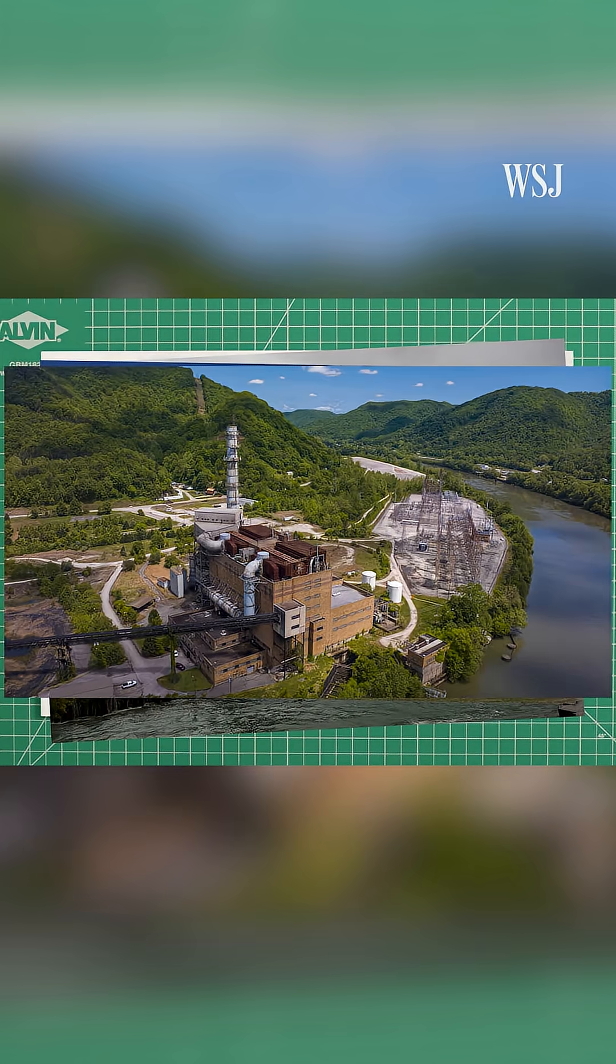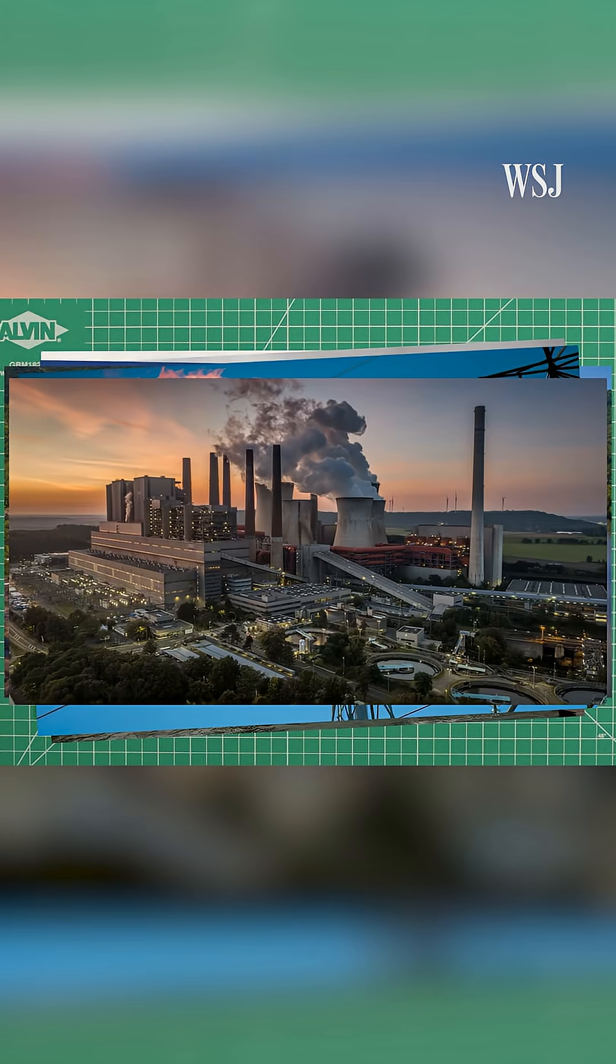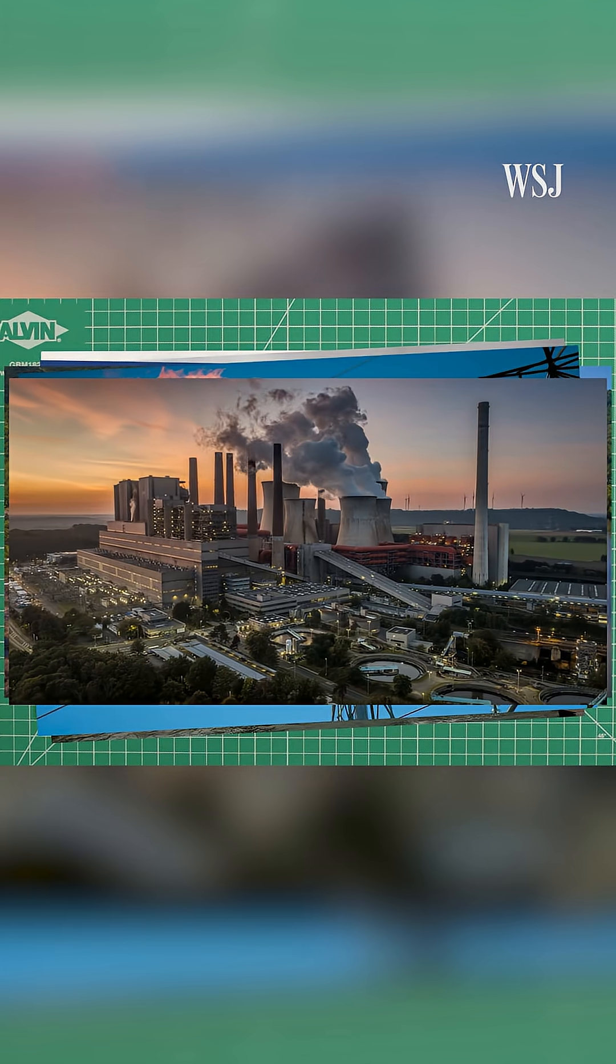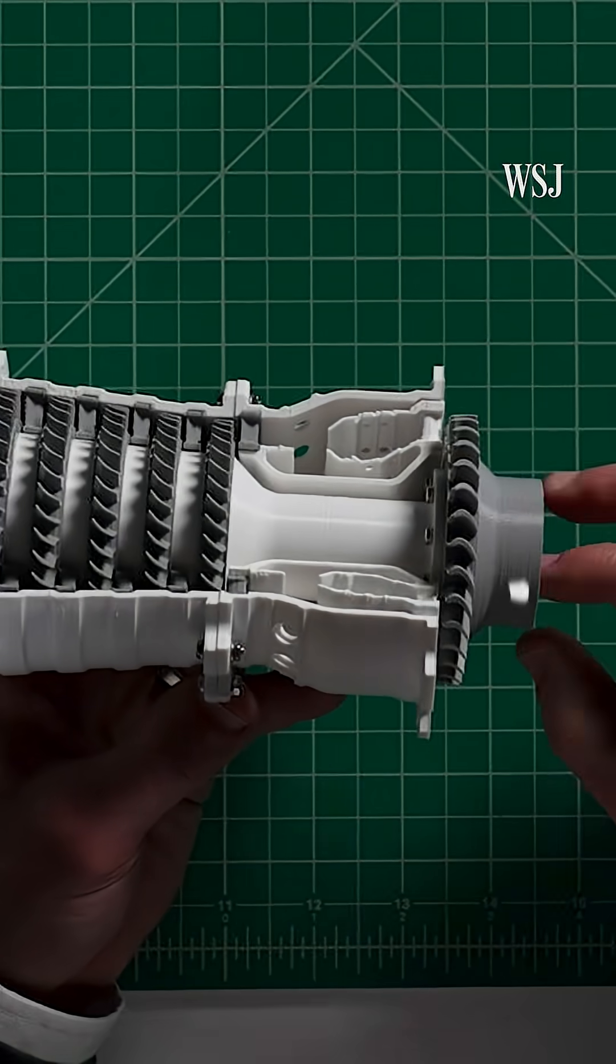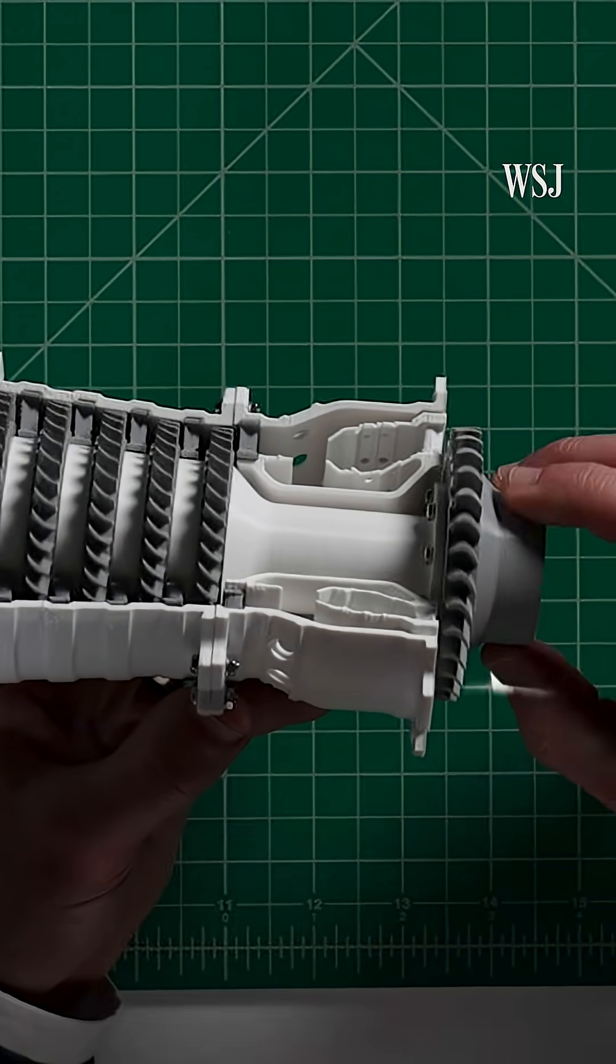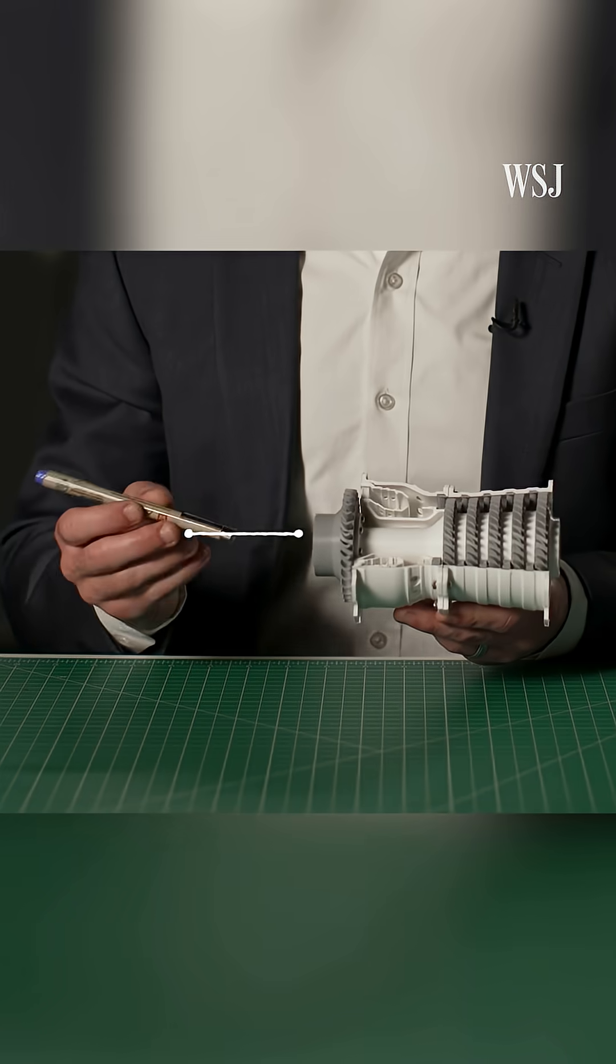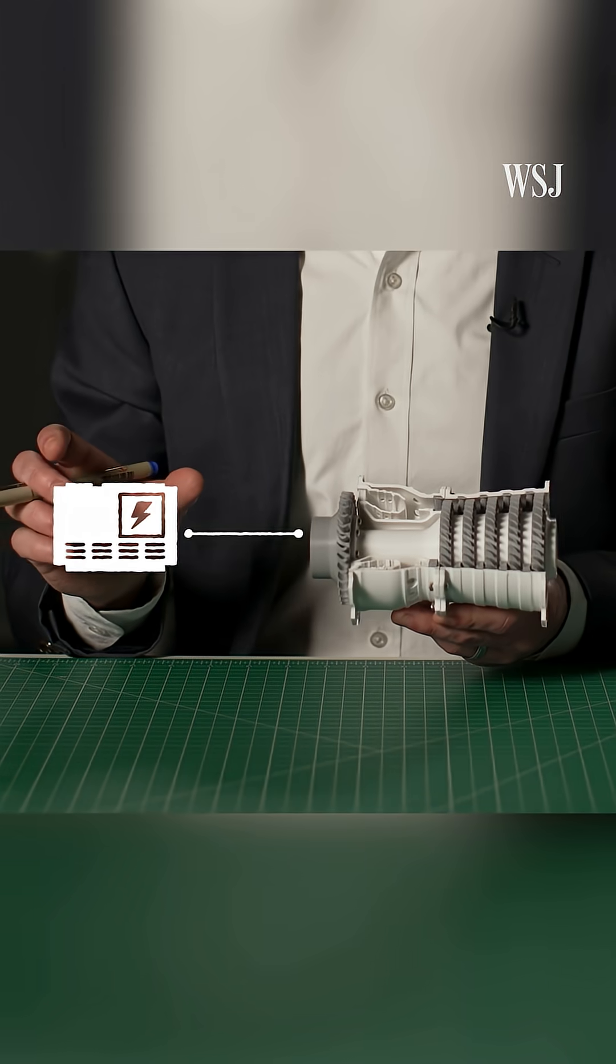Conventional power plants, like coal and natural gas, have inertia built into their design. This is a 3D printed model of a gas turbine. We burn the natural gas here and it creates this large spinning piece of rotating machinery. And this whole deal is connected to a generator that produces our electricity.